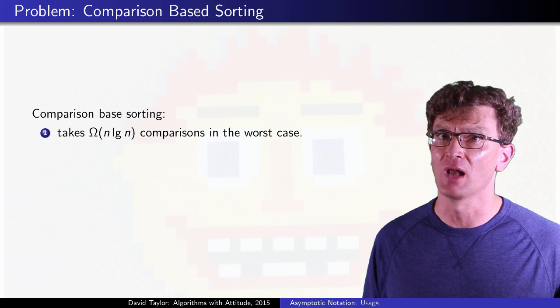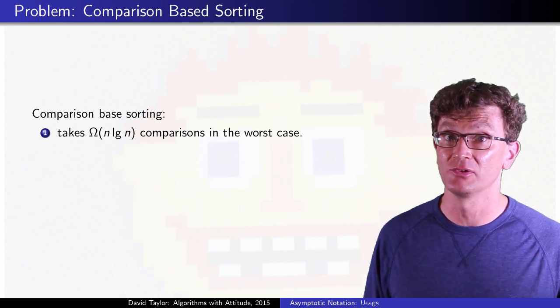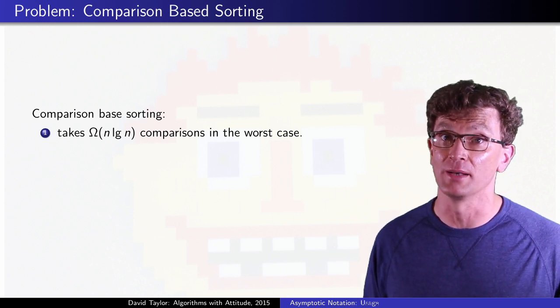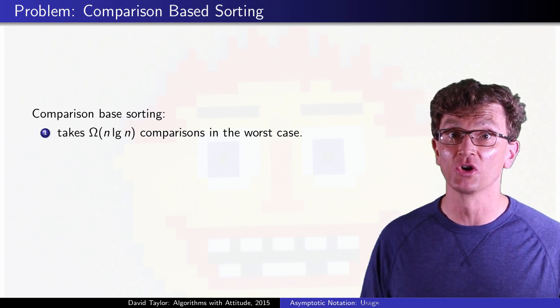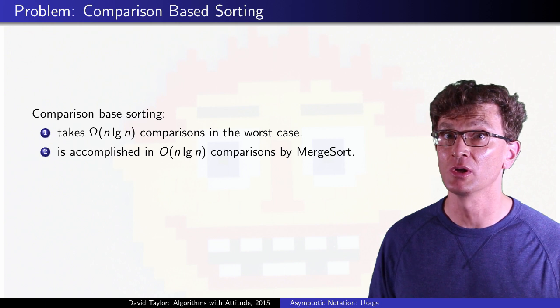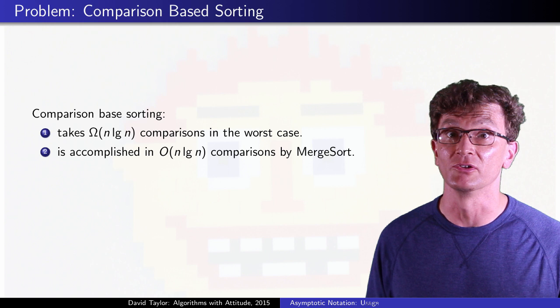This goes beyond saying that algorithms we have already discovered need that many comparisons, it even holds for algorithms nobody has thought up yet. Any comparison-based sort will need worst case order n log n comparisons. Now merge sort, which is a comparison-based sort, can sort using order n log n comparisons.